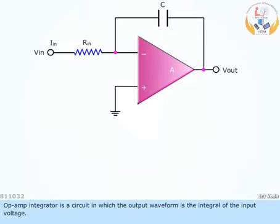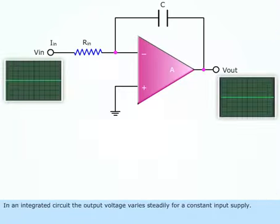Op-Amp integrator is a circuit in which the output waveform is the integral of the input voltage. In an integrated circuit, the output voltage varies steadily for a constant input supply.